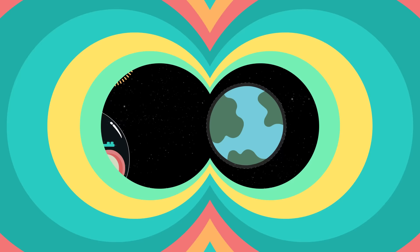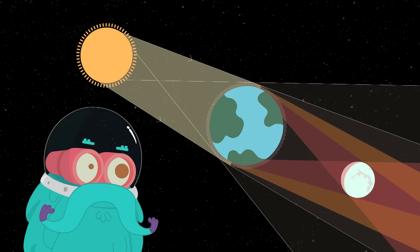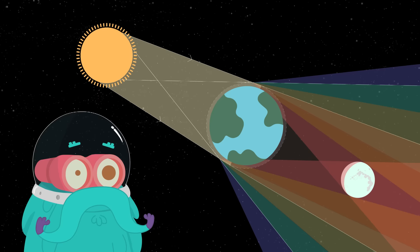As we all know, the rays of the Sun are made up of red, orange, yellow, green, blue, indigo and violet.